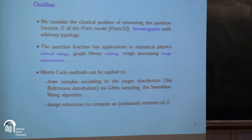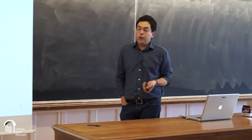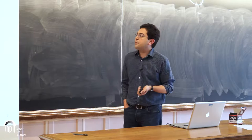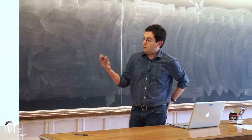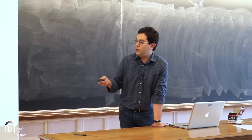In statistical physics, derivatives of Z are important. In graph theory, it's related to the chromatic polynomial and graph coloring — though that's not ferromagnetic, it's still the Potts model. In image processing, it has applications for image segmentation and denoising. We use Monte Carlo methods to draw samples according to the Boltzmann distribution, which can be done with Gibbs sampling or the Swendsen-Wang algorithm, and then use these samples to estimate the partition function.